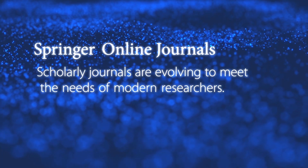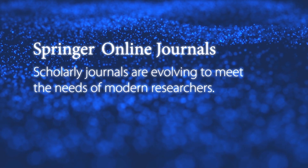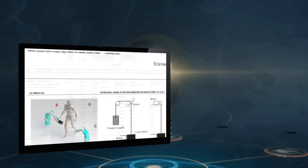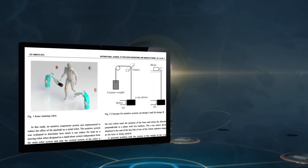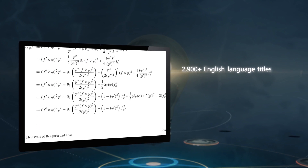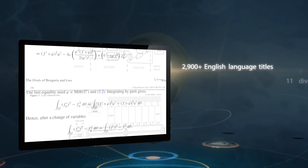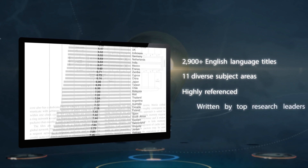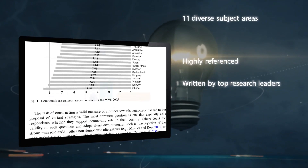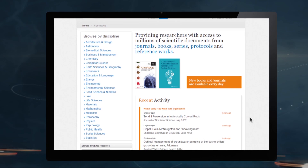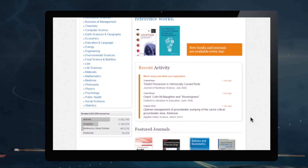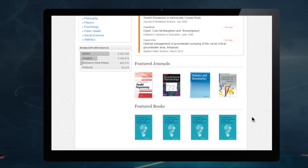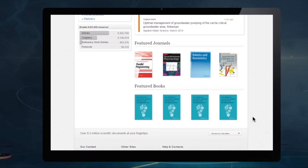Scholarly journals are evolving to meet the needs of modern researchers. With Springer Online Journals, you have access to a growing collection of over 2,900 English language titles in 11 diverse subject areas in the STM, Humanities and Social Sciences. All of this highly relevant content is made easily discoverable, readily available and portable via SpringerLink, the world's most comprehensive online collection of scientific content.